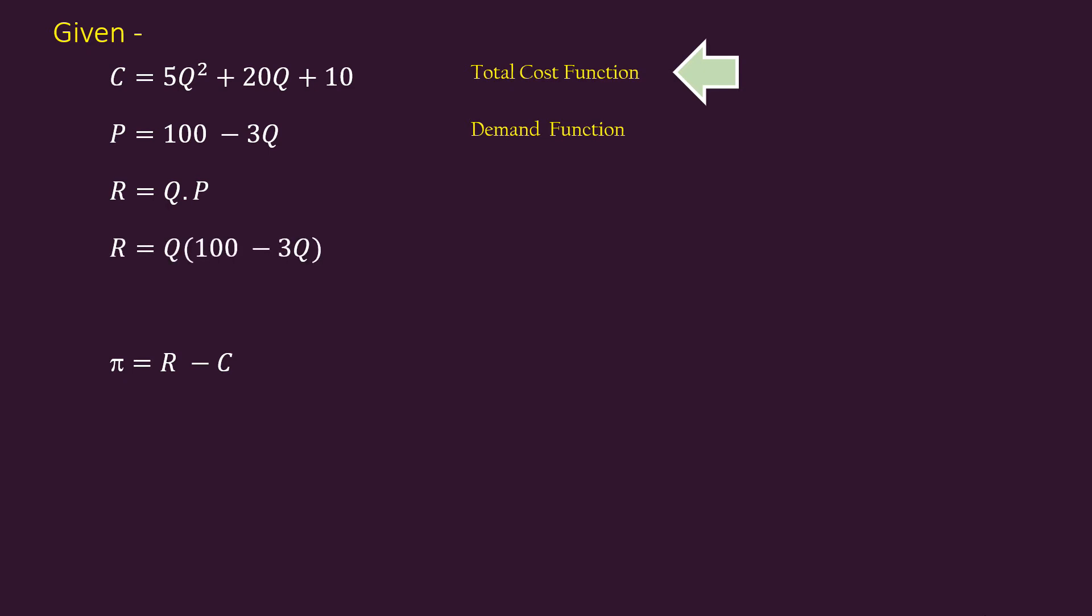Then, R equal to Q times 100 minus 3Q. Finally, we get R equal to 100Q minus 3Q squared. This is revenue function.